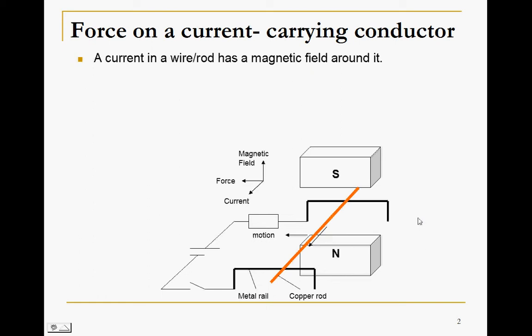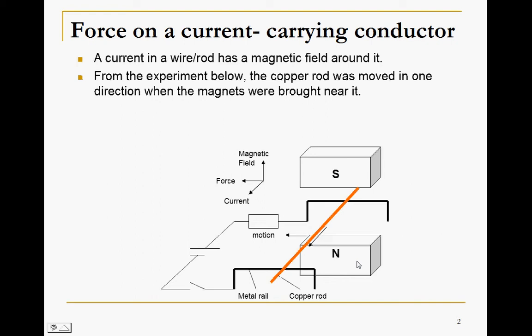Now what happens is that a current flowing in a copper rod has a magnetic field around it. This magnetic field due to the current will interact with the magnetic field due to the permanent magnet. Now what happens is that in this case, the copper rod will be made to move in one direction.